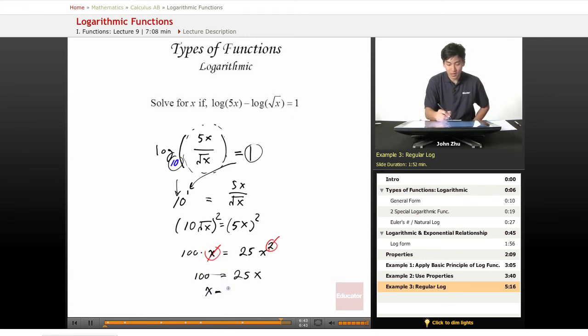And dividing 100 by 25, we get x equals 4.